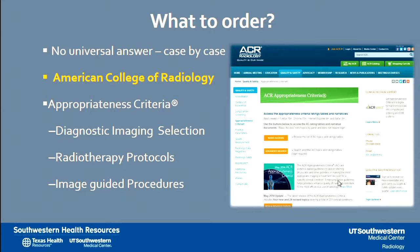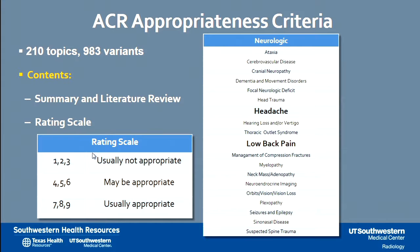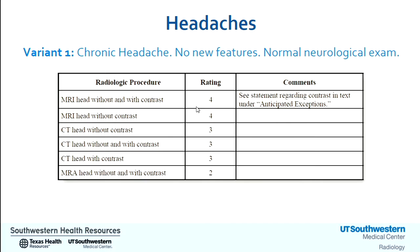What to order? Unfortunately there's no universal answer. Luckily, the American College of Radiology has published guidelines on these specific topics — the ACR Appropriateness Criteria. They're easy to Google and readily available. They cover 210 topics and 983 different clinical variants. Each one summarizes the issues with a literature review and provides a rating scale for all the different test options, ranging from 1 to 9, with 9 being usually appropriate and 1 almost never being appropriate. Headache and low back pain are among the criteria they've published for neurologic situations.